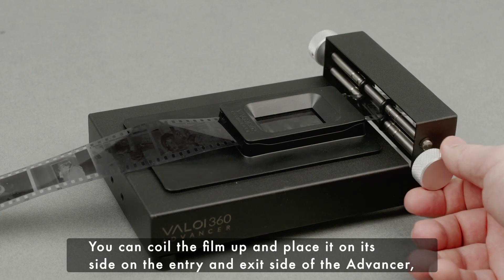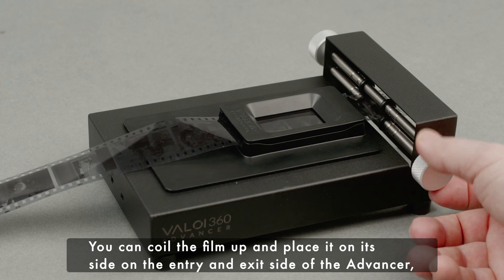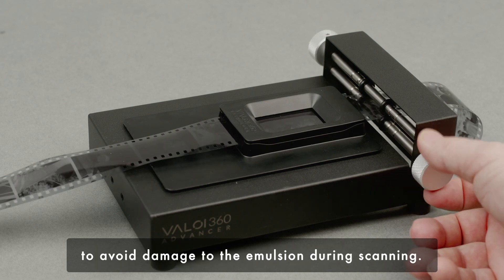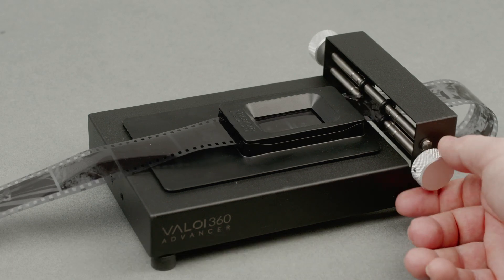You can coil the film up and place it on its side on the entry and exit side of the Advancer to avoid damage to the emulsion during scanning. To learn more about the Advancer, please see the separate listing.